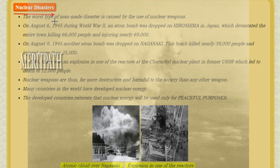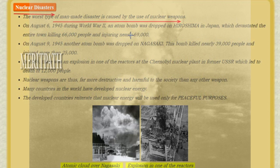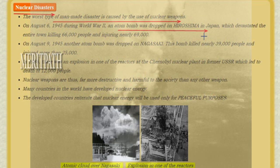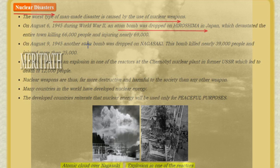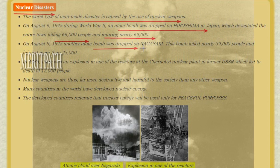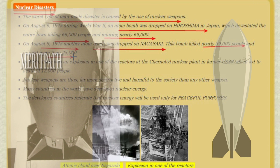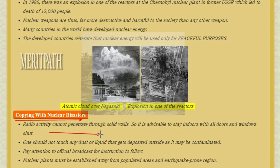Coming to the next type of disaster — nuclear disaster. This type of man-made disaster is caused by the use of nuclear weapons. An atom bomb was dropped on Hiroshima during World War 2 on August 6, 1945, devastating the entire town, killing about 66,000 people and injuring about 69,000. Another atom bomb was dropped on Nagasaki on August 9, 1945, killing nearly 39,000 and injuring more than 25,000. In 1986, there was an explosion in one of the nuclear reactors at the Chernobyl nuclear plant in the former USSR, leading to the death of thousands. Nuclear weapons are far more destructive and harmful to society than any other weapon.